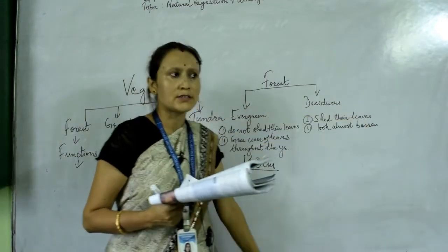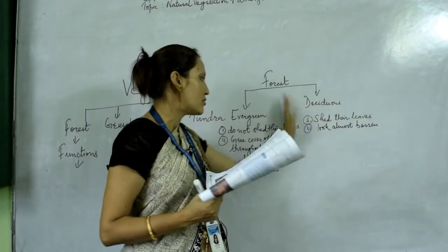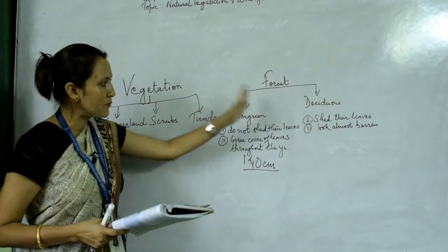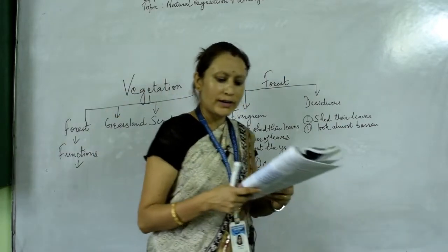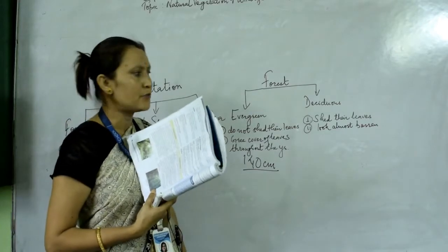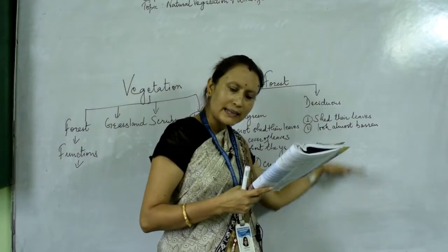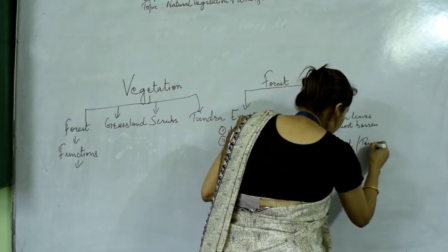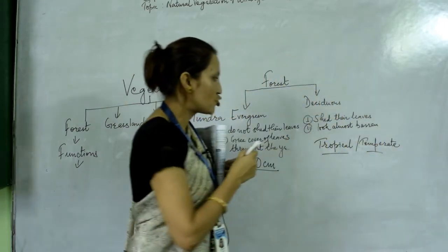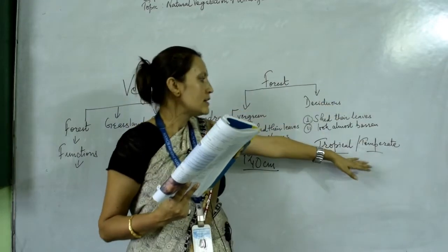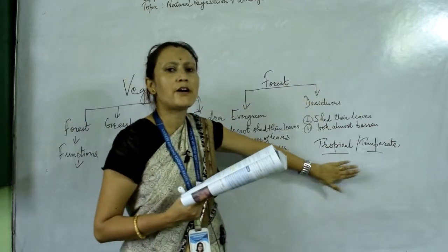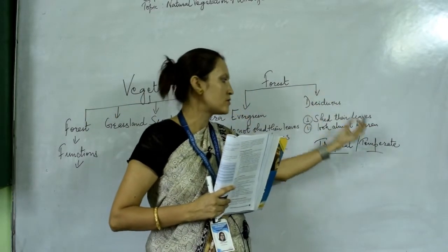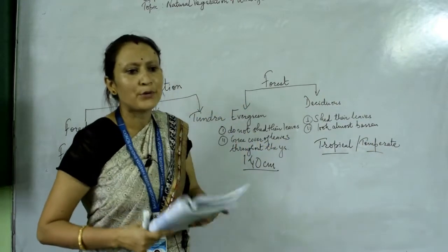Deciduous forests are types of forest where the plants often shed their leaves, so they look almost barren. These forests are mainly found in areas where rainfall is from 75 to 140 centimeters. This type of forest is again categorized into two heads: tropical deciduous forest and temperate deciduous forest.